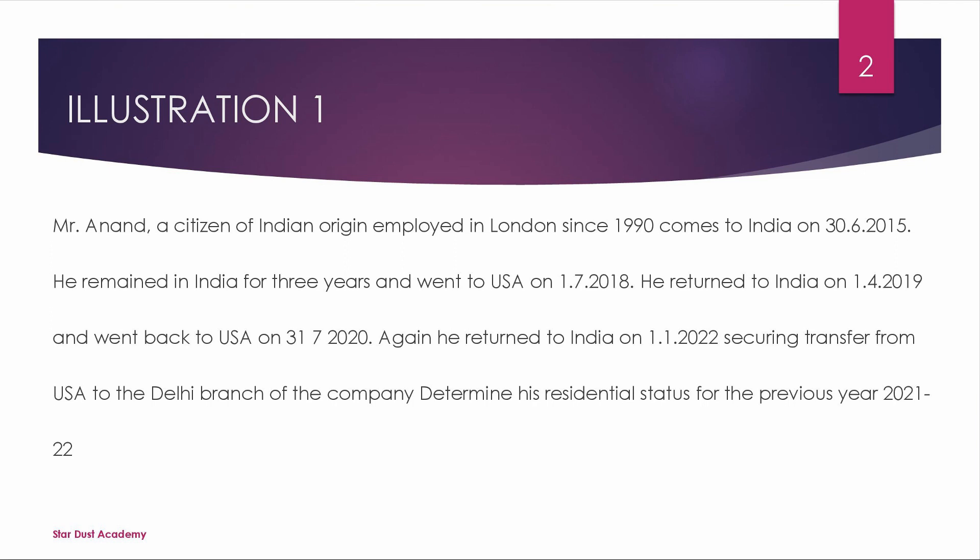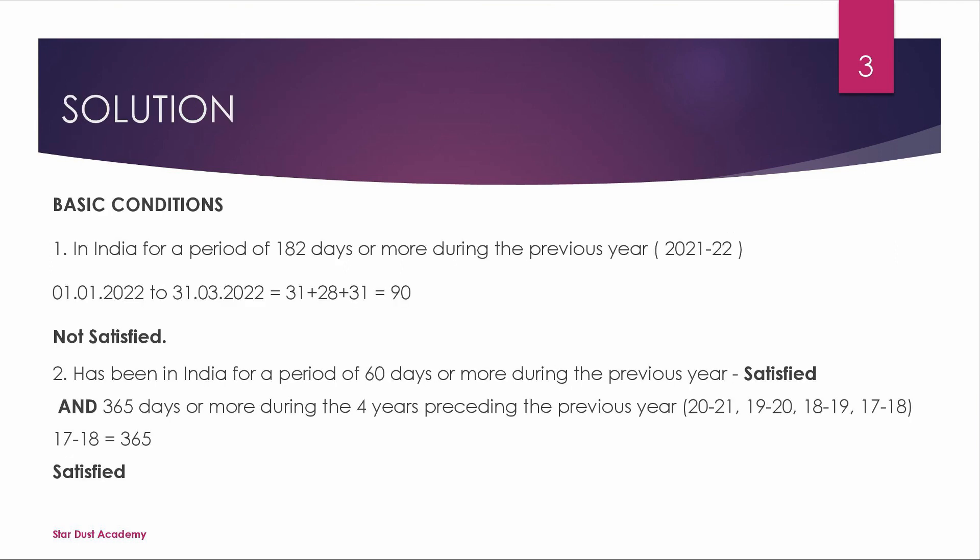For the individual, residential status is determined by checking 4 conditions. Basic condition number 1: he has been in India for a period of 182 days or more during the previous year. For previous year 21-22, we have 192 days in India, so the first condition is satisfied.